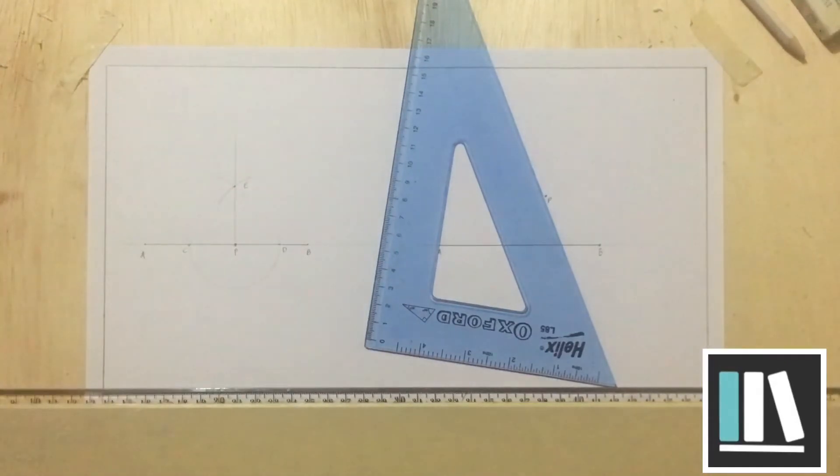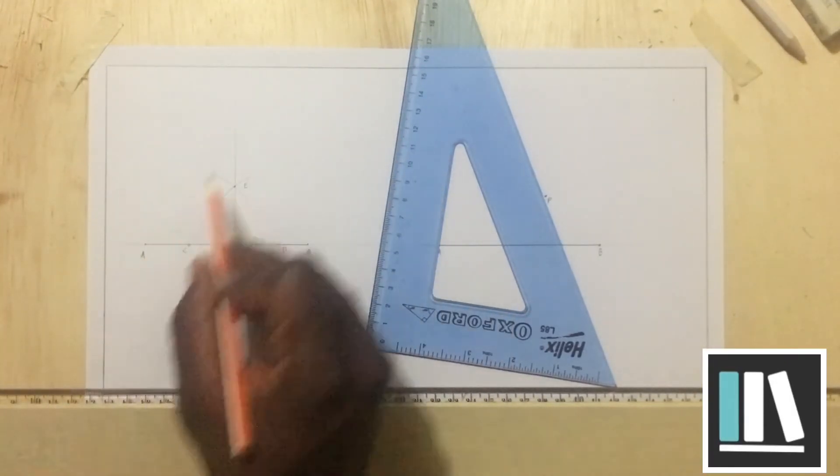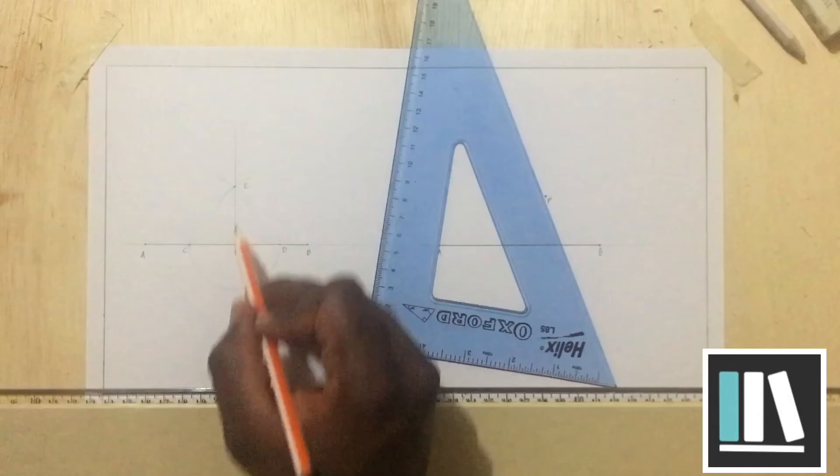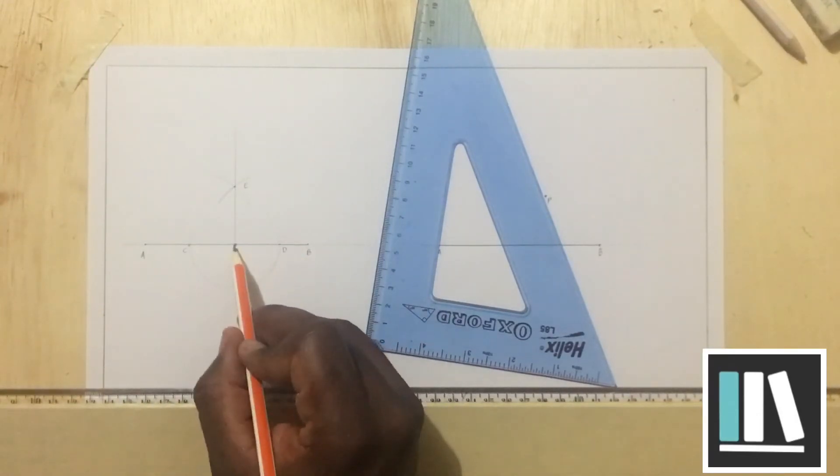So, here, there you have it, a line that is perpendicular to another line that is passing through point P on the line.